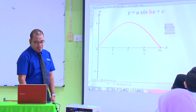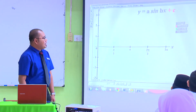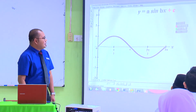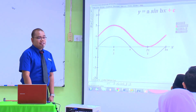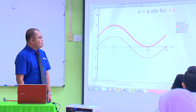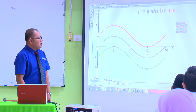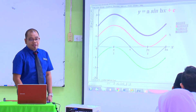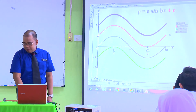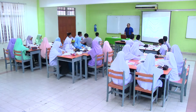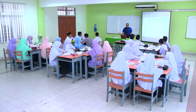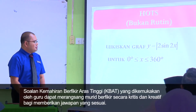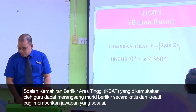Dan yang seterusnya adalah C. C adalah pergerakan ke atas dan ke bawah bergantung kepada pertambahan dia. Kalau yang asal begini, kalau tambah 1, graf akan naik 1 unit ke atas. Kalau tolak 1, turun bawah 1. Dan kalau tambah 2, graf akan naik 2 unit ke atas. Itulah yang dimasukkan dengan nilai A, B dan C. Sekarang, cuba lukiskan graf bagi soalan ini: Lukiskan graf Y sama dengan modulus 2 sin 2x untuk 0 hingga 360 darjah.